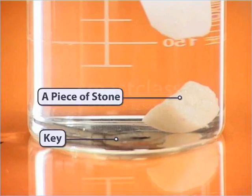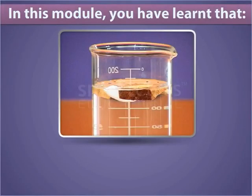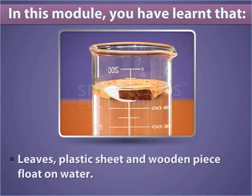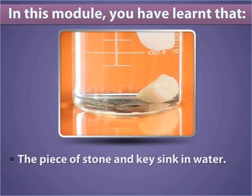and the key sink to the bottom of the beaker. In this module you have learned that leaves, plastic sheet, and wooden piece float on water, while the piece of stone and key sink in water.